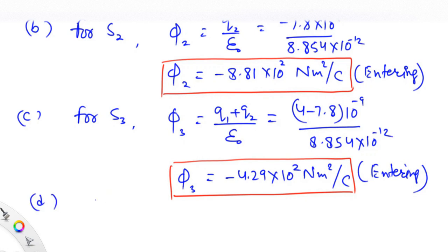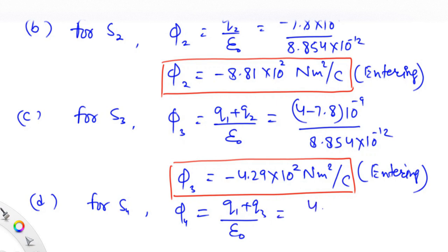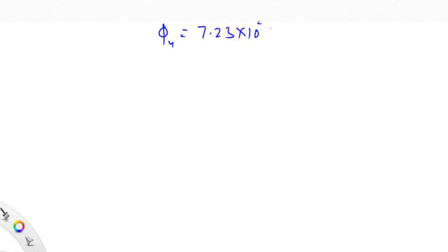For the fourth part, for surface s4, φ4 is given by (q1 + q3) / ε₀. This is (4 + 2.4) nanocoulombs × 10⁻⁹ divided by 8.854×10⁻¹². It is calculated to be +7.23×10² N·m²/C. It is positive, so the flux is leaving the Gaussian surface. This is the answer for the fourth part.